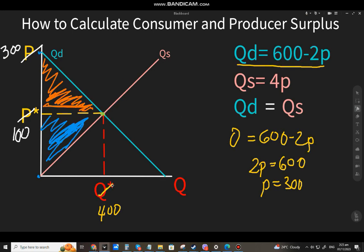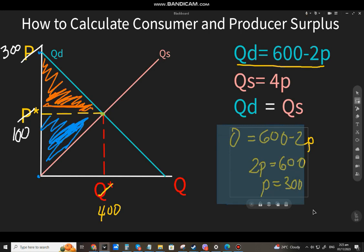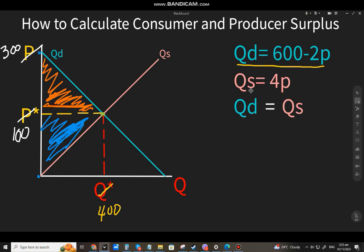Ngayon. Paano naman itong dito? Kailangan mo din kasi maalaman ito para makumumay area ng triangle. I-equal mo sa zero. Yung QS. Zero is equal to 4P. So, alam natin na P ay zero. So, mas madali na ito. Zero lang ito.